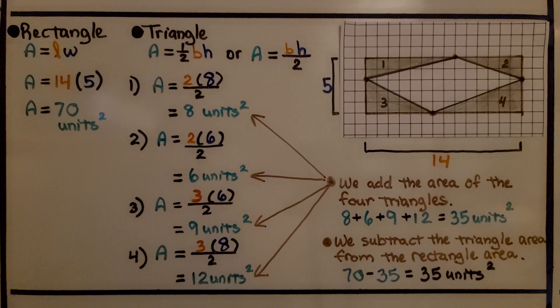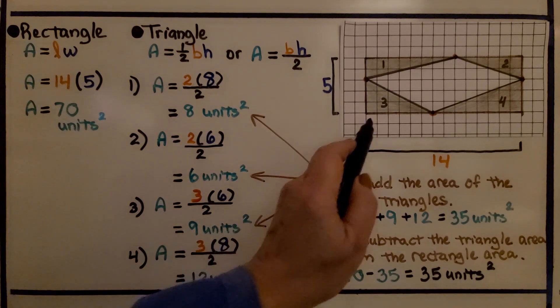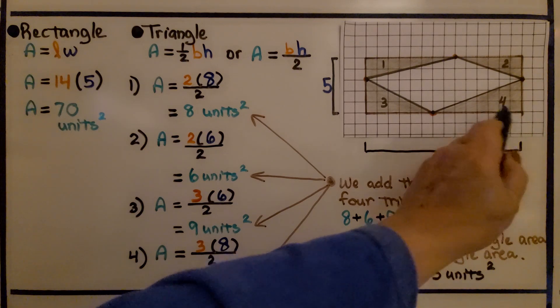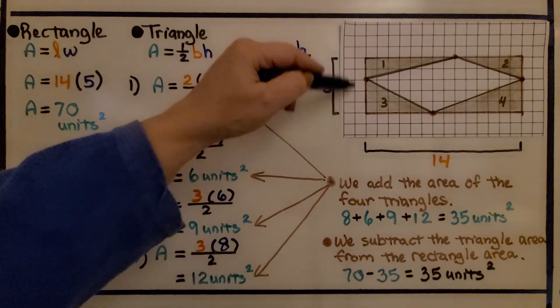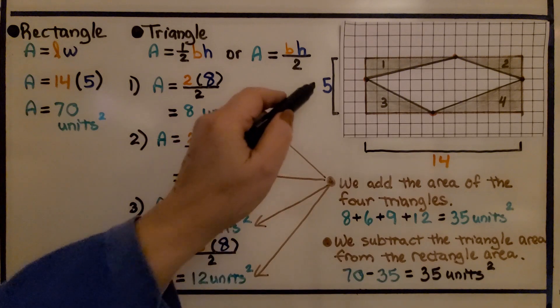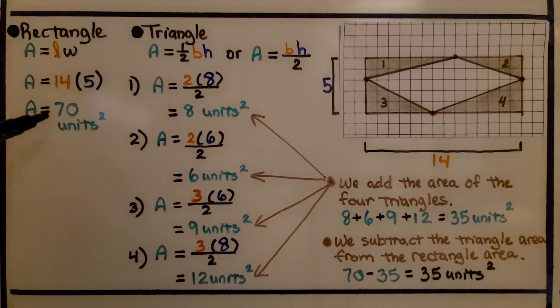Since it's drawn on grid paper, we can find the area of the rectangle. We count the number of squares in the length, the units, and we do the same for the height. We get 14 by 5. We multiply that and get 70 units square. Now we need to do each triangle.